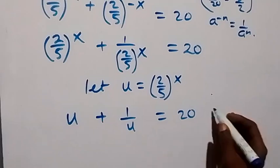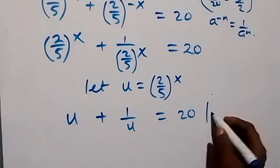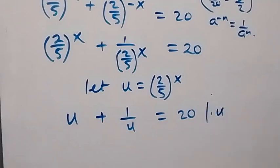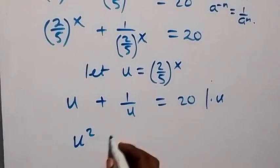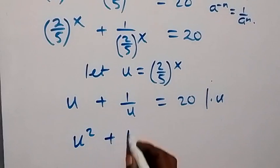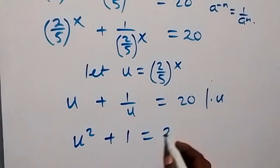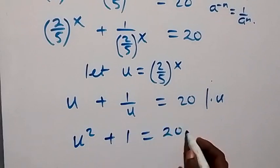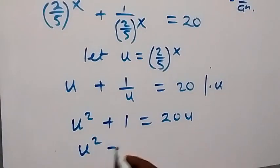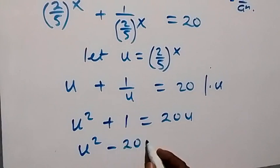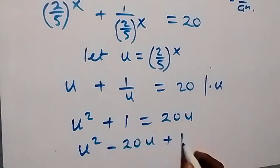We multiply through by u: this becomes u squared, then u cancels here, we have plus 1 equals 20u. Bringing 20u to this side and rearranging, we now have u squared minus 20u plus 1 equals 0.